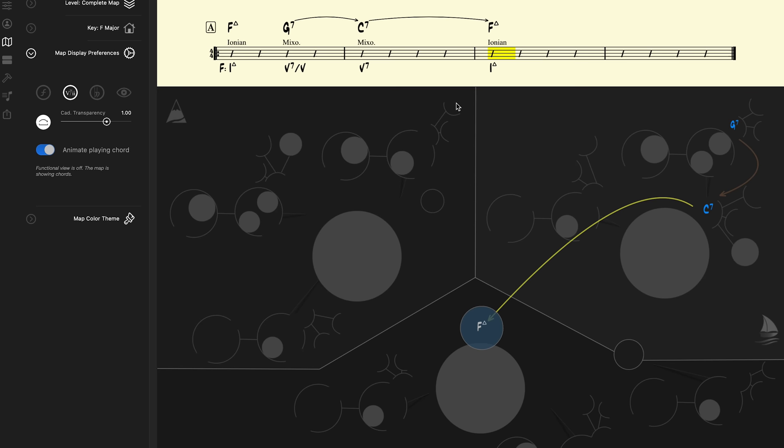Now if we interpolate the related 2 before the 5, we get F major 7, G7, G minor 7, C7 to F major 7. This turns the progression into a 1 major 7, 5-of-5, 2 minor 7, 5-1. But here's where things get interesting.